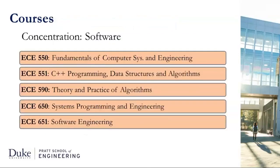Our most popular concentration is software. Students taking this pretty much take the same three courses in their first semester: ECE 550 Fundamentals of Computer Systems and Engineering, ECE 551 C++ Programming, Data Structures and Algorithms, and ECE 590 Theory and Practice of Algorithms. ECE 550 covers lower levels of software and the interface between software and hardware, assembly, and so on. Theory and Practice of Algorithms is our own take on an algorithms course — rather than spending the entire semester doing proofs as in a typical CS department, we connect theory with practice so you not only prove properties of algorithms but also implement them and see how theory compares with practice.